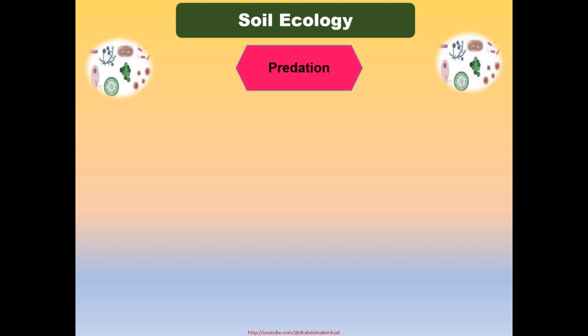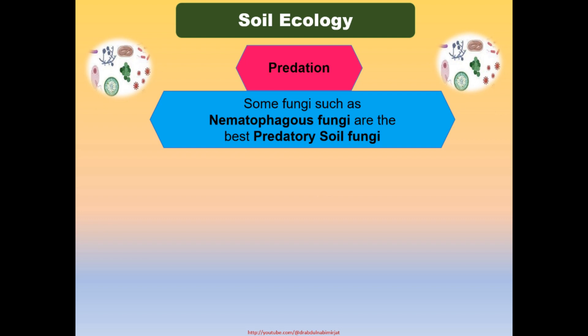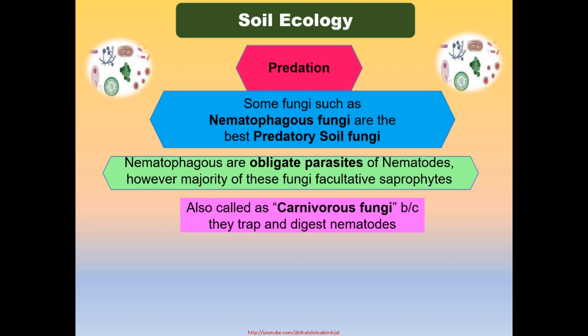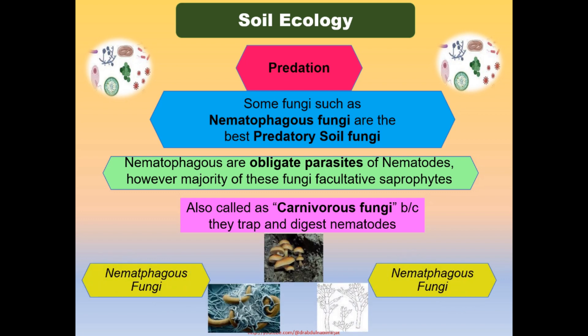Some fungi such as nematophagous fungi are the best predatory soil fungi. The term nematophagi means the eating of nematodes by fungi. Nematophagous fungi are obligate parasites of nematodes; however, the majority are facultative saprophytes. They are used for biological control of plant-parasitic nematodes and are also called carnivorous fungi because they trap and digest nematodes. The most common species is Paecilomyces, which is considered among the best nematophagous fungi.